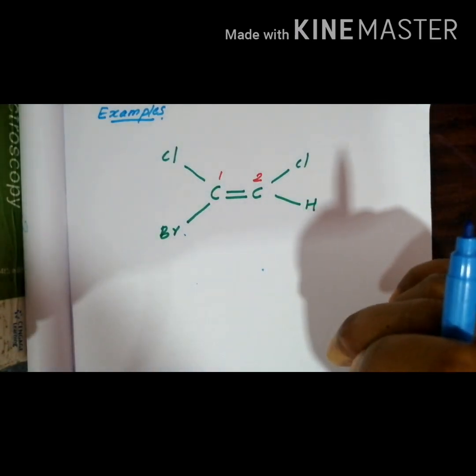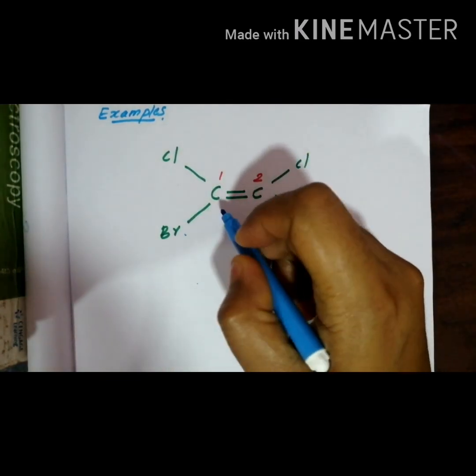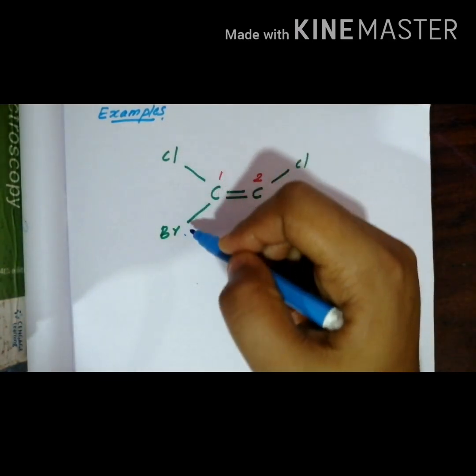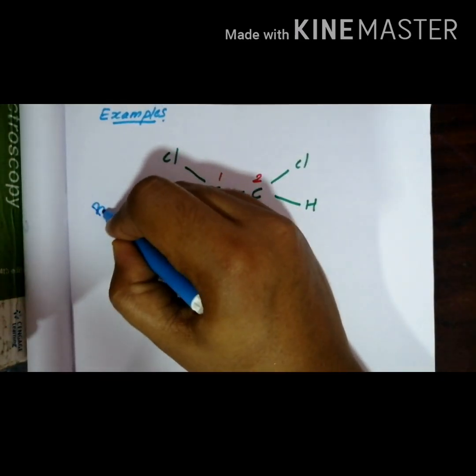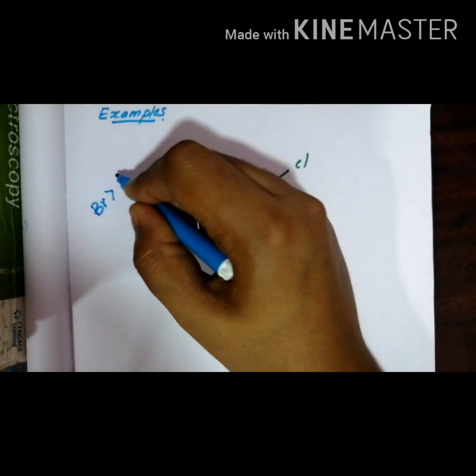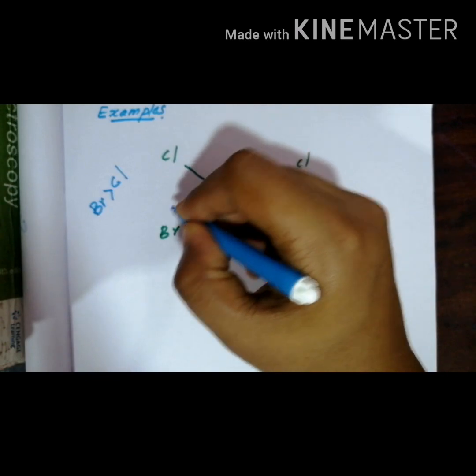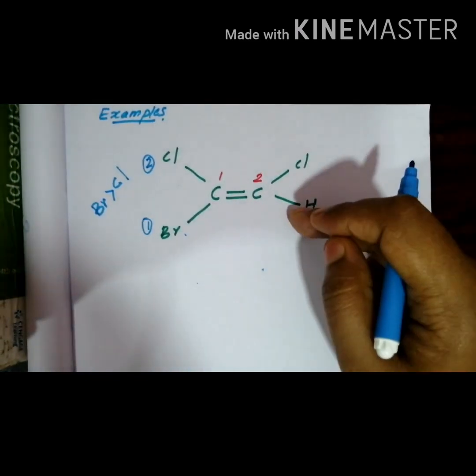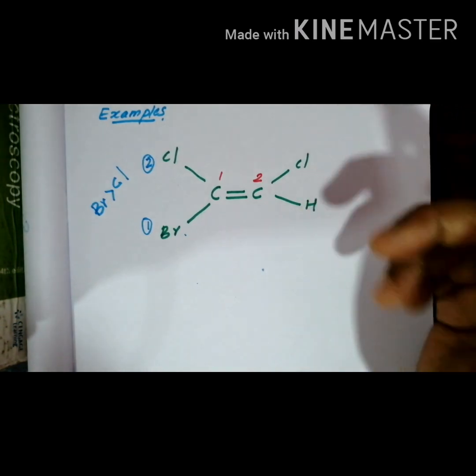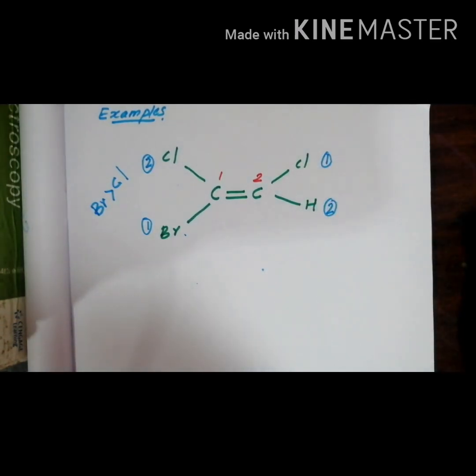We can assign the priority number on the basis of its atomic number. We are selecting carbon number 1 in which two groups are present, Bromine and Chlorine, and we know that Bromine has more atomic number than Chlorine. Then you can number the system: this is 1, this is 2. And here it is clearly known that Chlorine is 1 to be 1, hydrogen is least priority group.